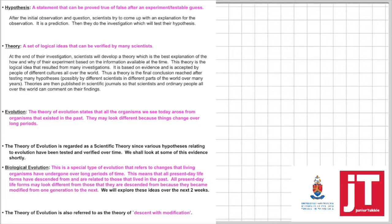Now let's look at evolution. The theory of evolution states that all organisms we see today arose from organisms that existed in the past. They may look different because things change over long periods of time.